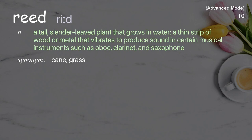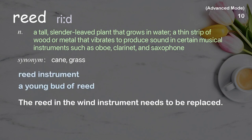Reed. A tall, slender-leafed plant that grows in water. Also, a thin strip of wood or metal that vibrates to produce sound in certain musical instruments such as oboe, clarinet, and saxophone. Examples: reed instrument, a young bud of reed. The reed in the wind instrument needs to be replaced.